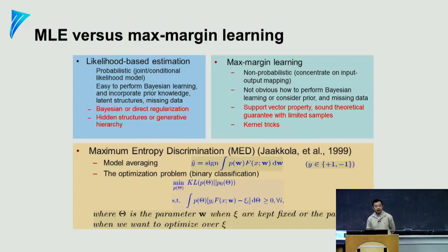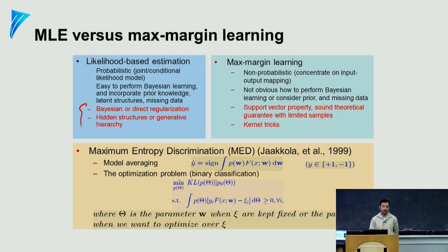Why are these two learning paradigms competing for attention? Because they have complementary advantages. Probabilistic models are elegant and give a lot of flexibility: you can introduce a prior distribution and go into the Bayesian paradigm naturally, and you can introduce latent variables so that you have latent space models. Without requiring you to change the learning framework, you employ an EM algorithm and learn something more flexible.